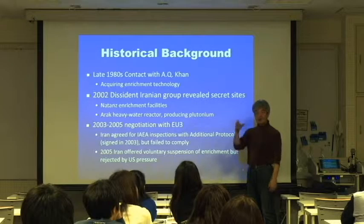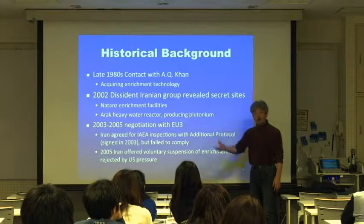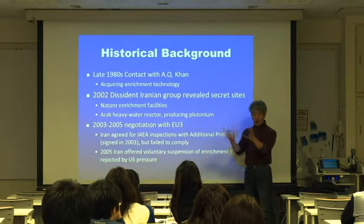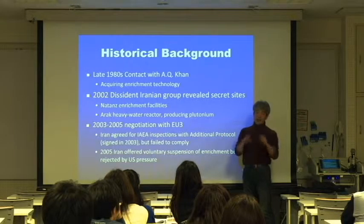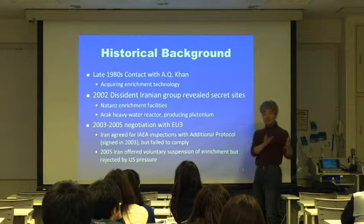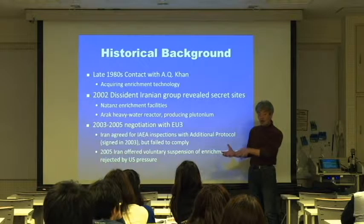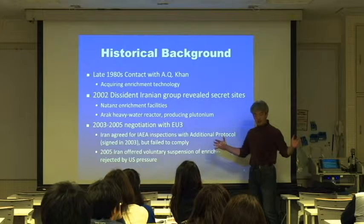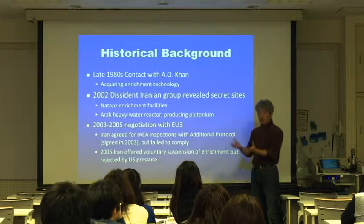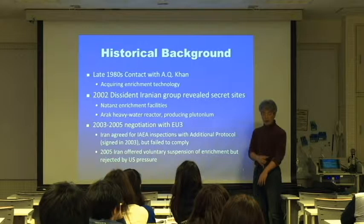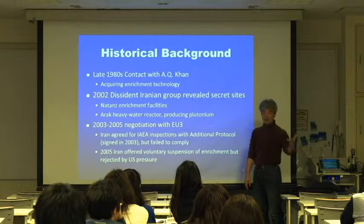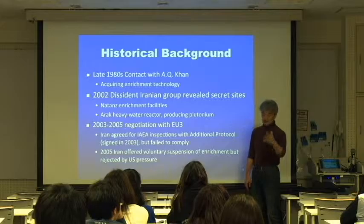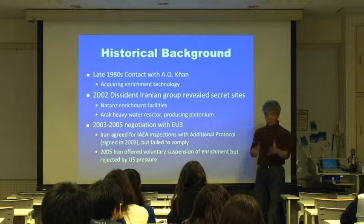America wanted to overturn the new Islamic Republic and put the Pahlavi regime back. The method they used was to use Saddam Hussein in Iraq to fight against the Islamic Republic of Iran. There was an Iran-Iraq war from 1980 to 1988 — eight long years. The newly born Islamic Republic of Iran faced a very tough fight against the American-backed Saddam Hussein. It's an irony of history that the Americans helped Saddam Hussein build his chemical warfare capability.